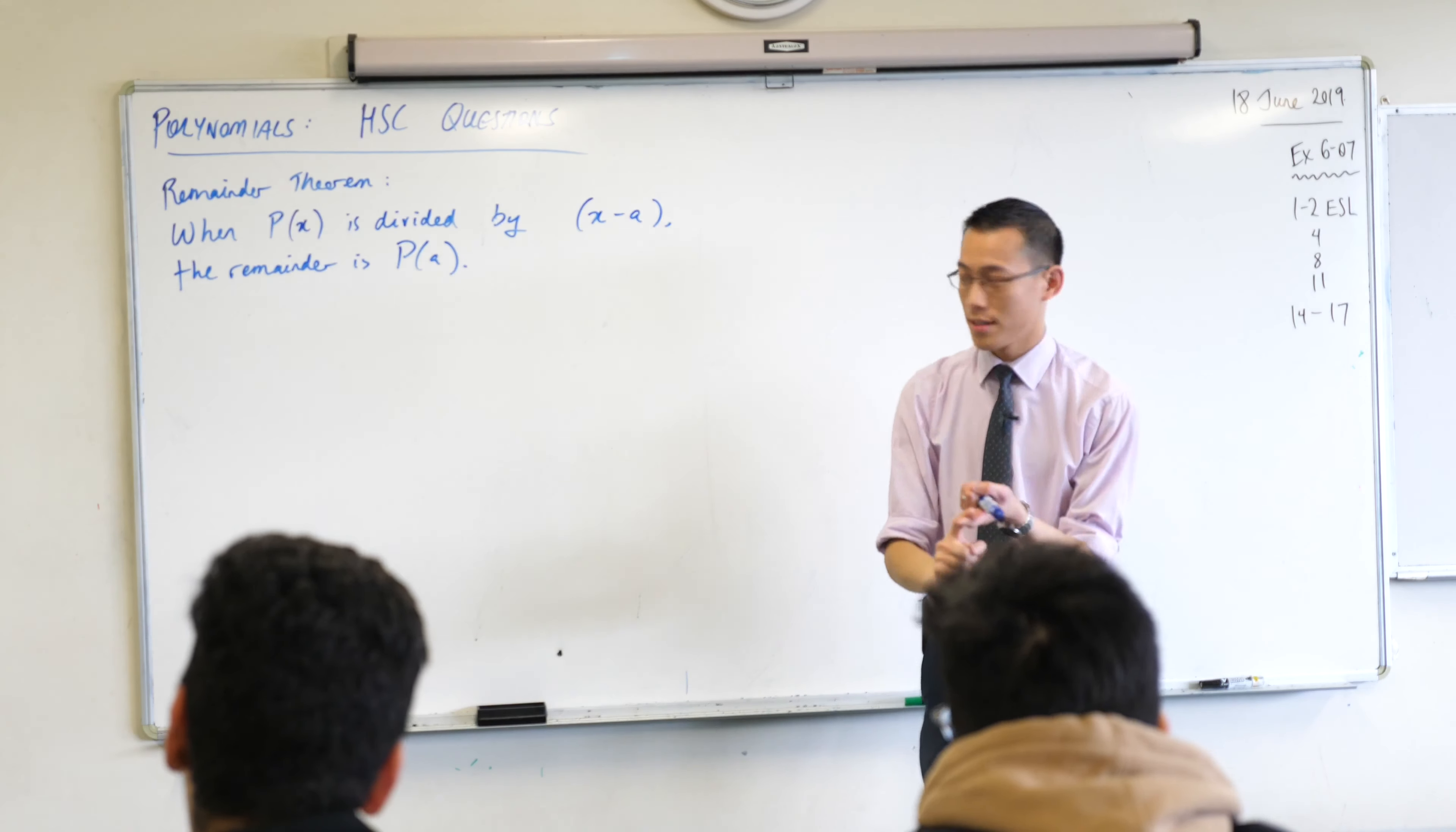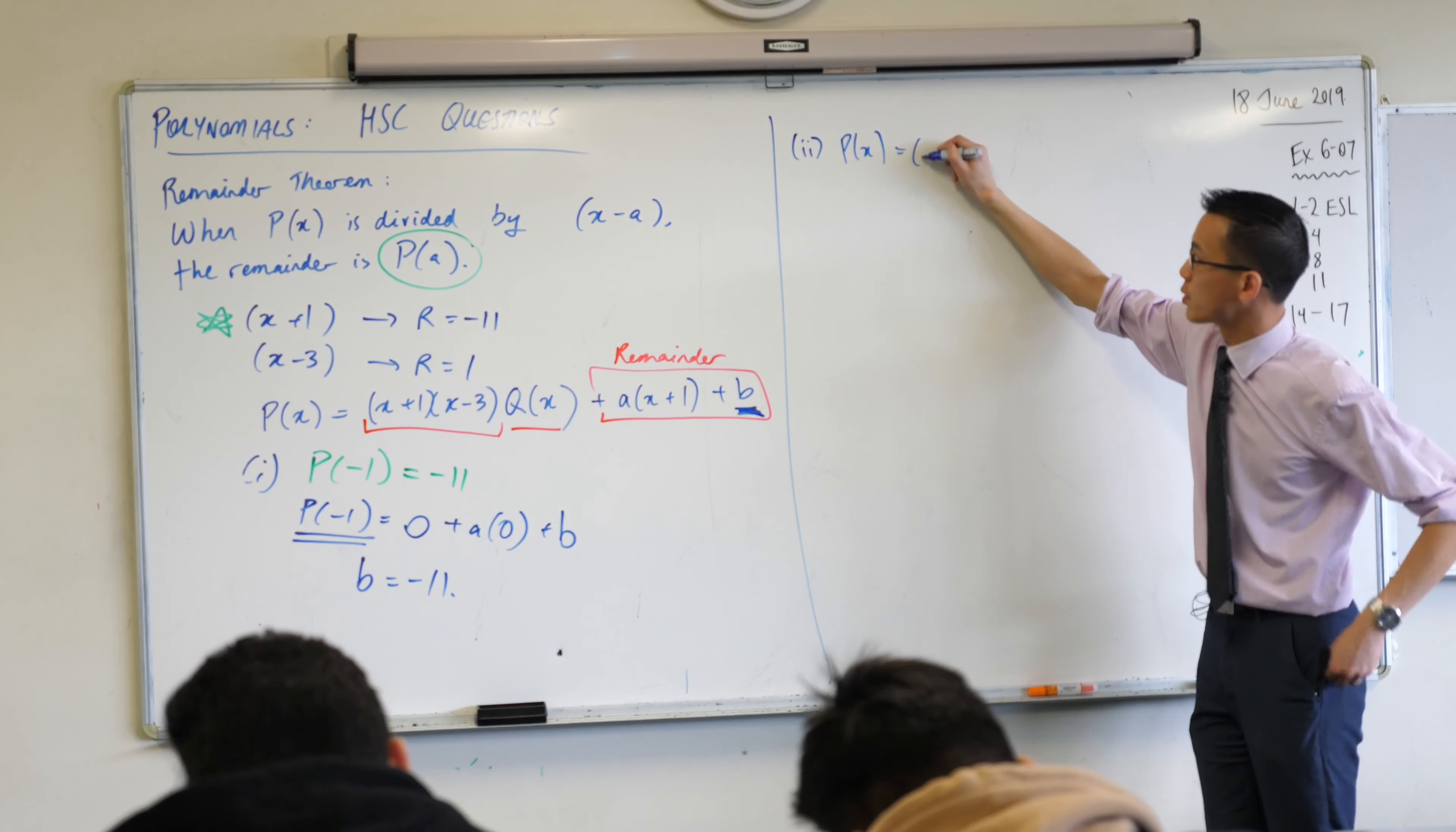So that was part 1, that's all you had to do. But you had to know to use the remainder theorem in this particular way. Then part 2 continues - it says, now that you know this, can you find out this whole thing here?